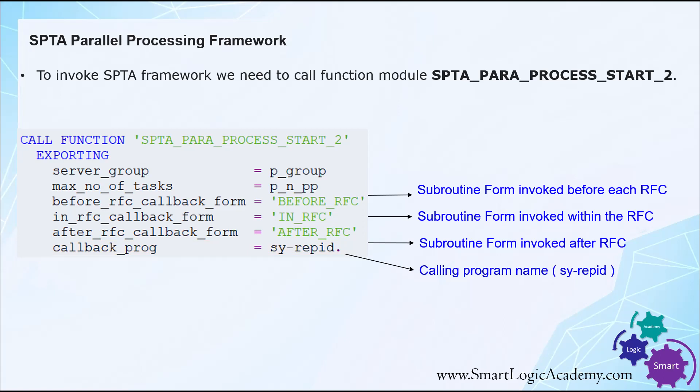Now let's discuss more about these three subroutines. The before RFC callback form is called by the SPTA function module before calling the RFC function module, or before executing the custom logic for parallel processing. In this subroutine, we have to create small internal tables, which we refer to as work packets, for parallel processing in the in RFC subroutine.